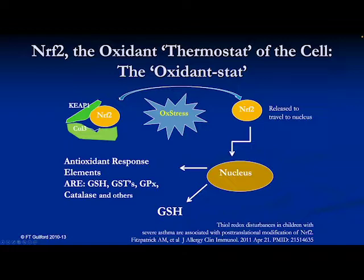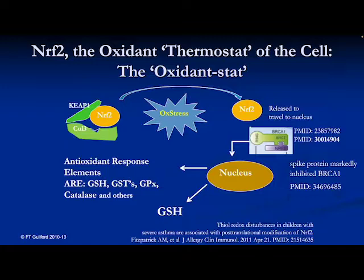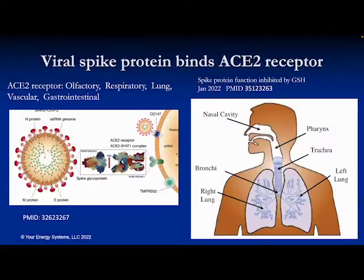There is a thermostat in the cell that regulates the amount of oxidation — I call it an oxidant stat. When this protein is contacted by oxidation, it releases a protein called Nrf2 that travels to the nucleus and triggers antioxidant response elements, including glutathione, transferase enzymes for detoxification, and the peroxidase enzyme. It turns out that Nrf2 needs BRCA1 as a companion to stimulate antioxidant element production and glutathione production.